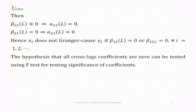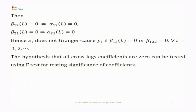From these relations, β₁₂(L) = 0 implies α₁₂(L) = 0, and β₂₁(L) = 0 implies α₂₁(L) = 0. Hence, x_t does not Granger cause y_t if β₁₂(L) = 0, or if β₁₂(i) = 0 for all i. The hypothesis that all cross-lag coefficients are zero can be tested using an F-test for the significance of those coefficients.